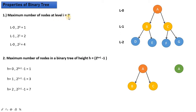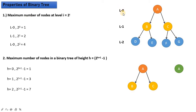The first property is: the maximum number of nodes at level i is equal to 2 raised to power i. We already discussed the concept of level — like a building where ground floor is level zero, first floor is level one, and so on. In a tree (which is upside down), level zero starts from the root. So maximum nodes at level 0 = 2^0 = 1, at level 1 = 2^1 = 2, and at level 2 = 2^2 = 4.